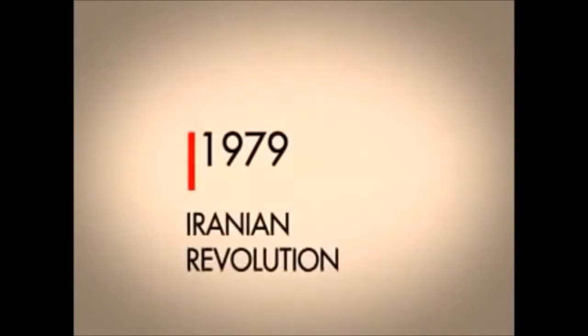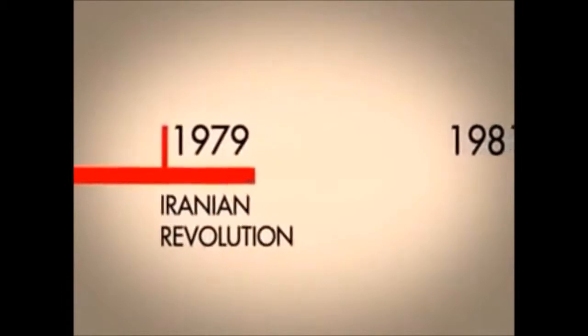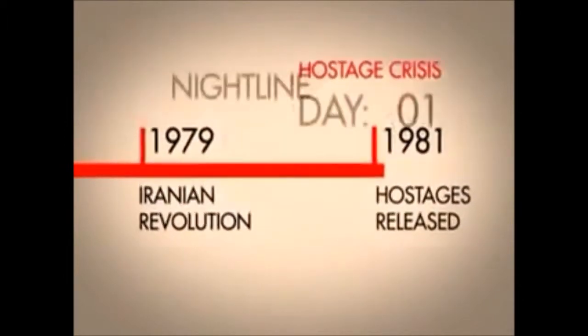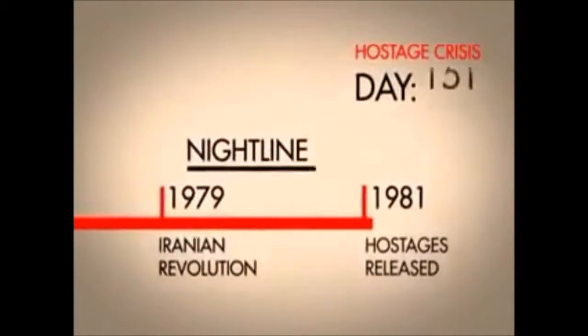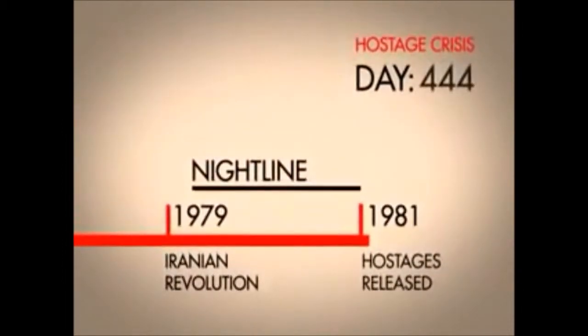For most Americans, the story begins in 1979 with the Iranian Revolution and the hostage crisis. A group of revolutionary university students took over the American Embassy in Tehran and held 52 diplomats hostage for 444 days. To help burn this into the American narrative, the news show Nightline was created with a nightly tally of the number of days since the crisis started.